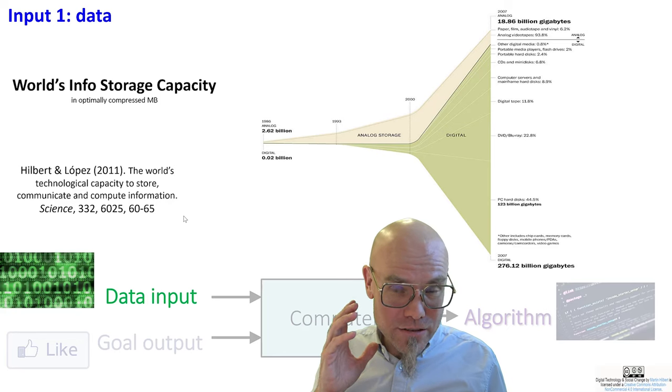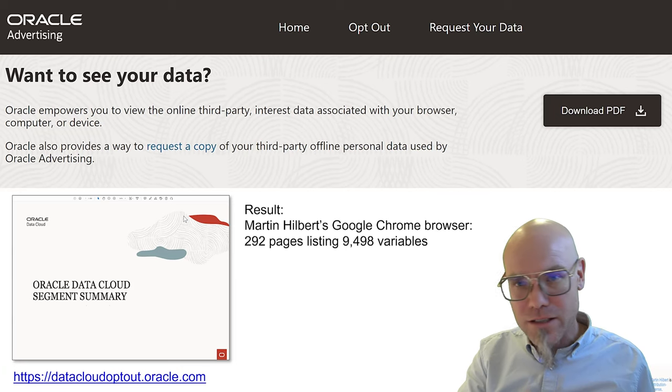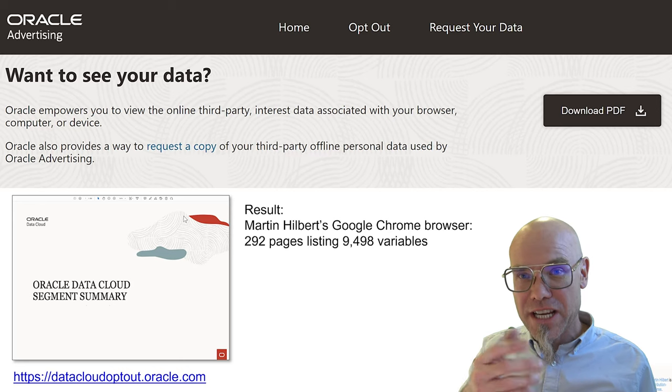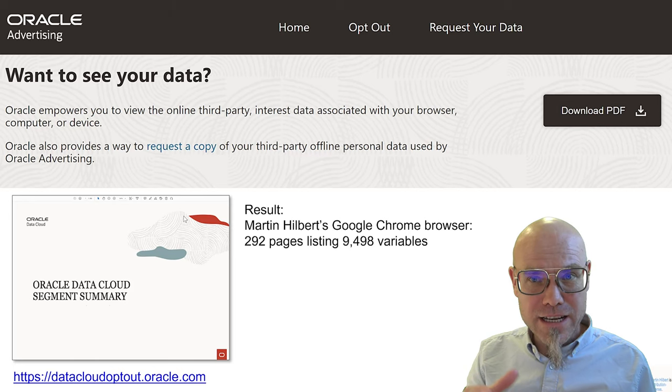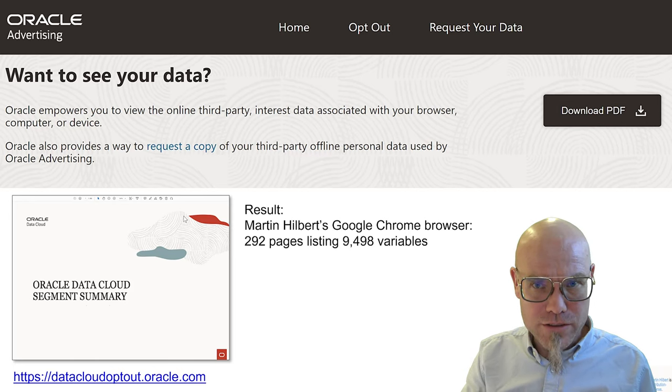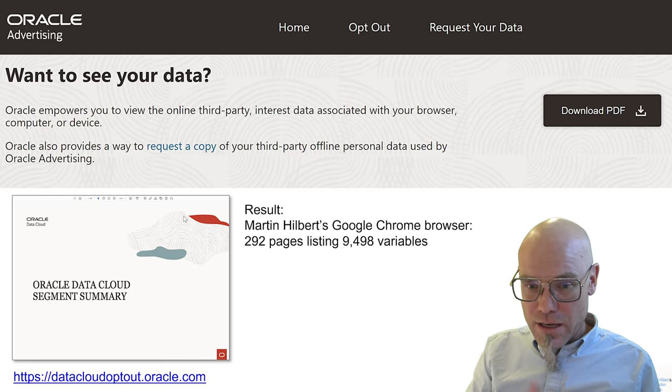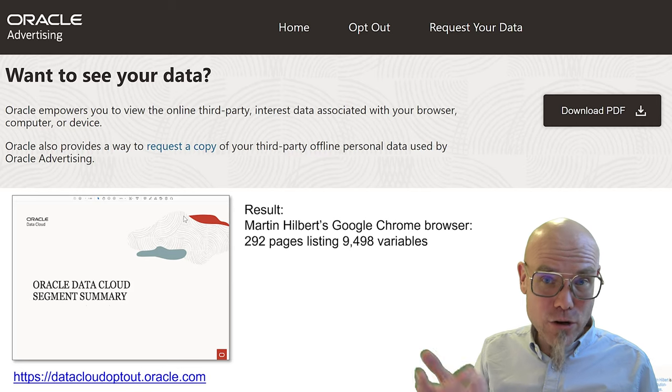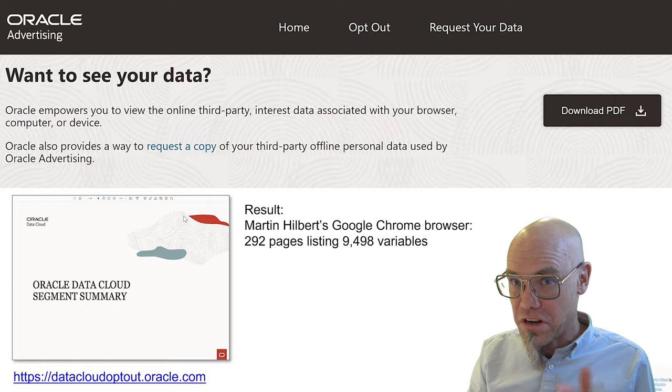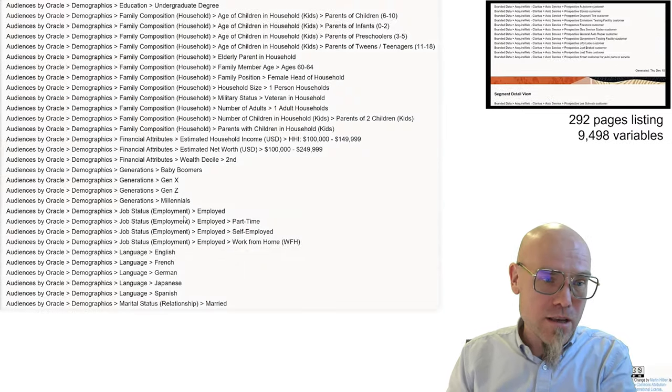There's so much data that is produced all the time, in real time. You can check it out yourself. For example, Oracle at one point has been offering this extension that allows you to see what's in your Google Chrome browser. So I checked out a Google Chrome browser here and you can see my Google Chrome browser has almost 10,000 variables about myself. I downloaded the report to see what they are. It's a 300 page report.